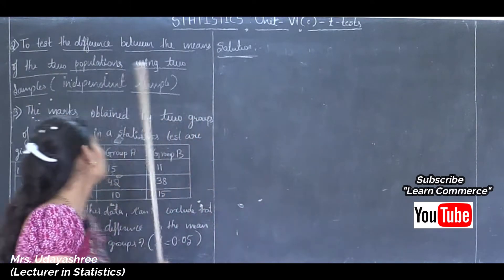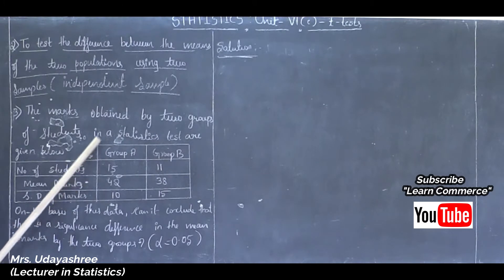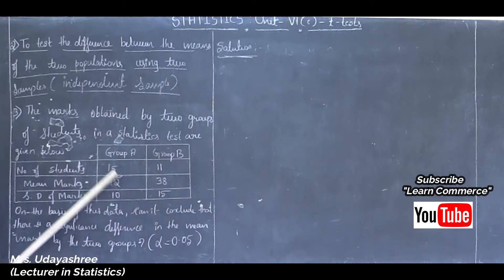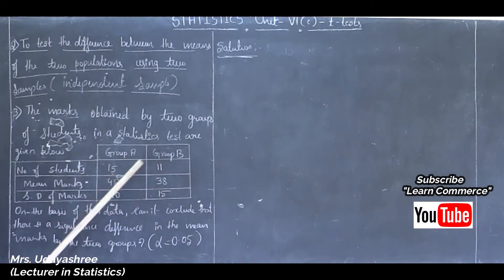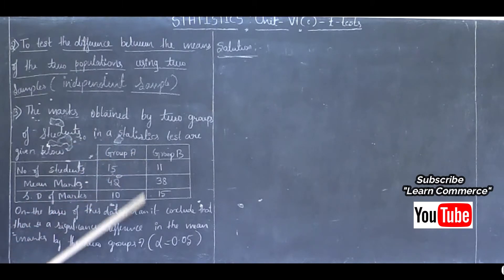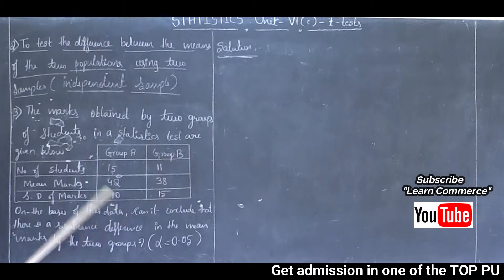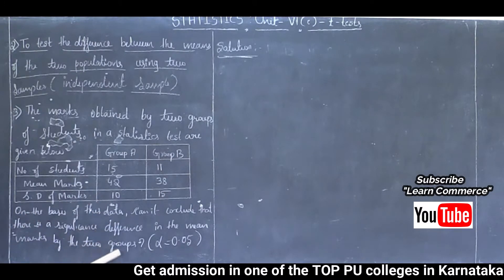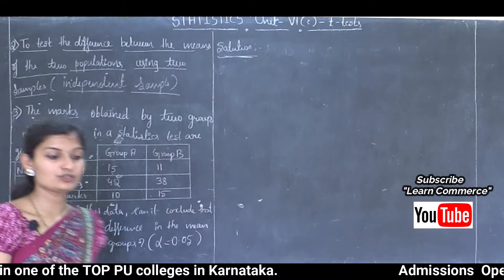Problem number 3: the marks obtained by two groups of students in a statistics test are given below. There are two sets of observations — Group A and Group B. The given information includes number of students, mean marks, and standard deviation of marks for these two sets of observations. We need to determine if there is a significant difference in the mean marks of the two groups at alpha equal to 0.05.